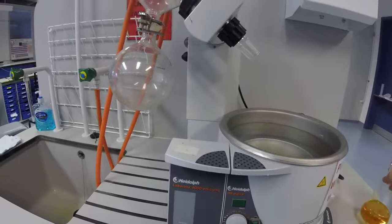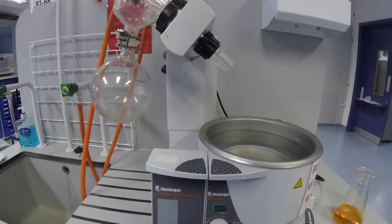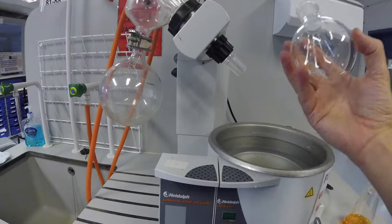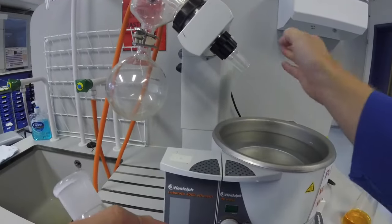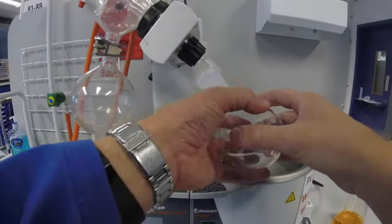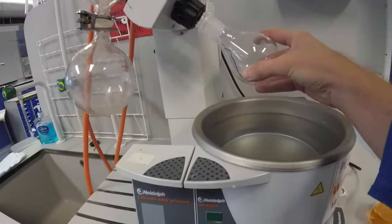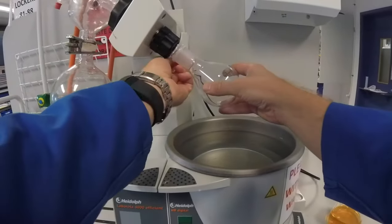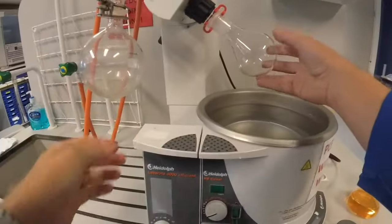So we use a rotary evaporator such as one of these and we're going to place our sample in the flask. The flask goes on this end here and it will be clipped and essentially what we have is a distillation setup.